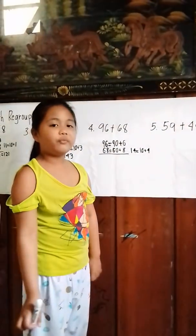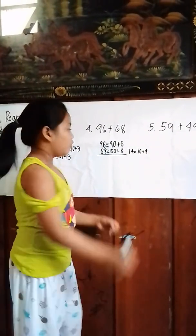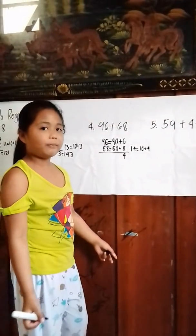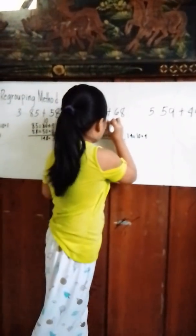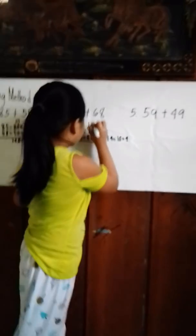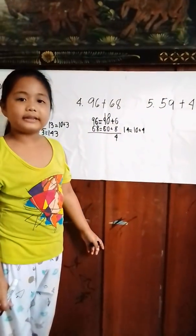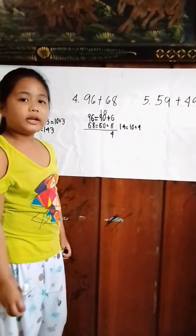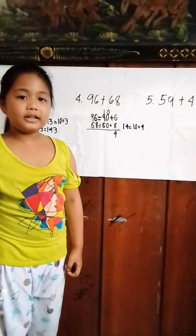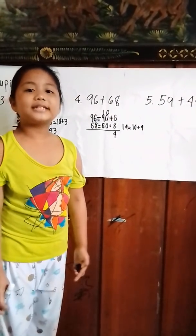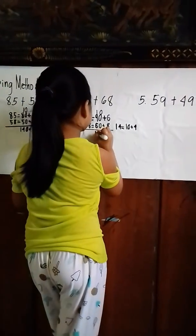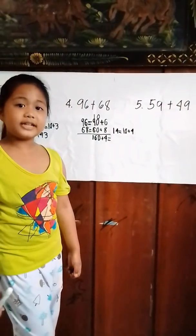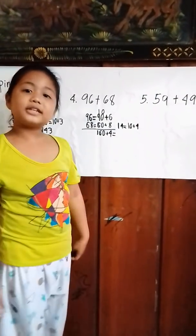We will put 4 below 8. Now we will add the next place. 90 plus 60 equals 160. 160 plus 4 equals 164. The answer is 164.